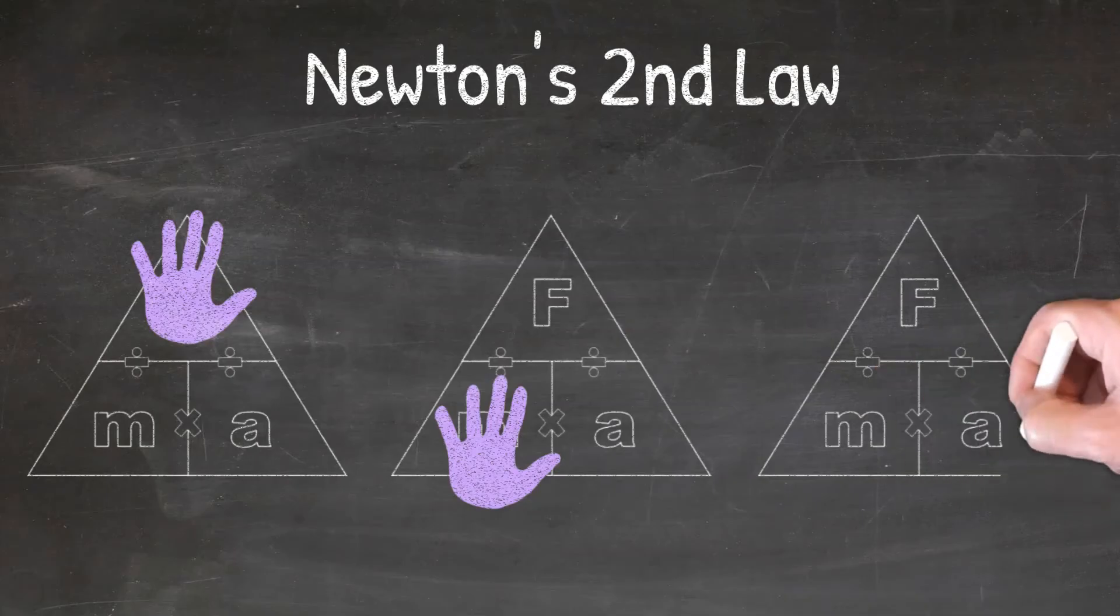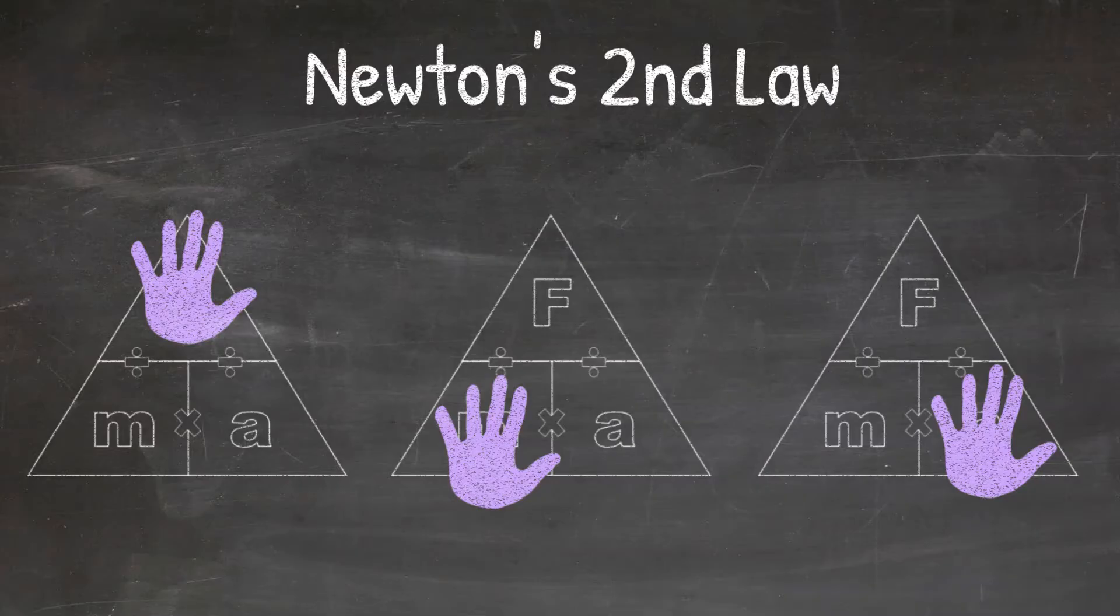And finally, if I'm solving for acceleration, I'll cover up the letter A and the triangle tells me to divide force divided by mass. I know this because the variable F is on the top of the variable M.